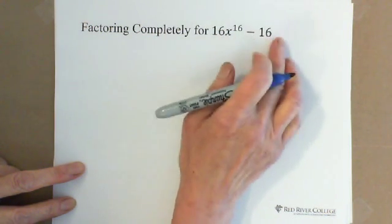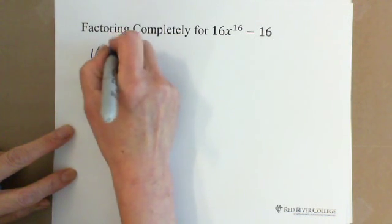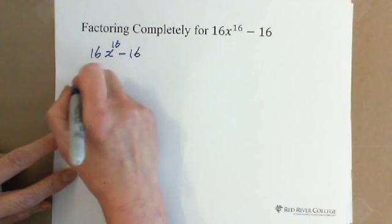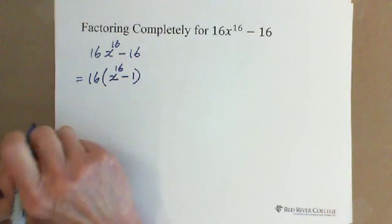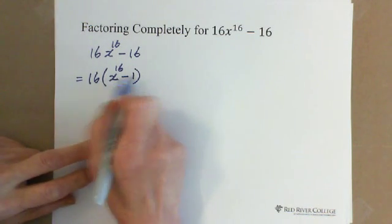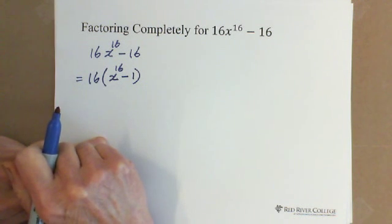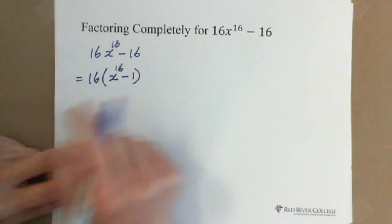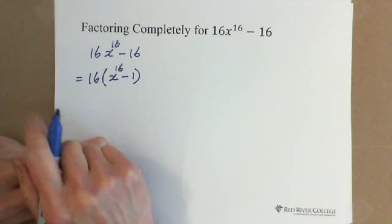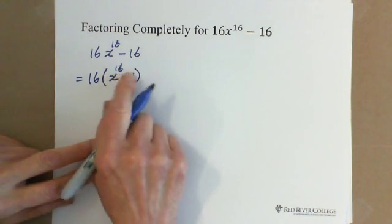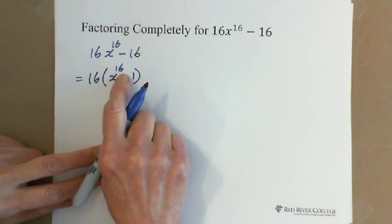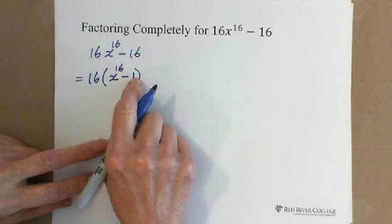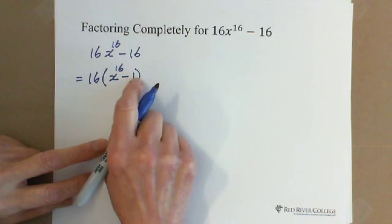So we have a common factor of 16, and we can factor it out: 16x¹⁶ minus 16 equals 16 times (x¹⁶ minus 1). Now, which formula do we need? We don't have a 16th exponent formula directly. We have x² minus y², and we have a³ minus b³. The 16 is an even number, so it's not related to the cube — it's related to the difference of squares. And the 1 can be written as any exponent: 1² is 1, 1³ is 1, so we can write any exponent on top of 1.